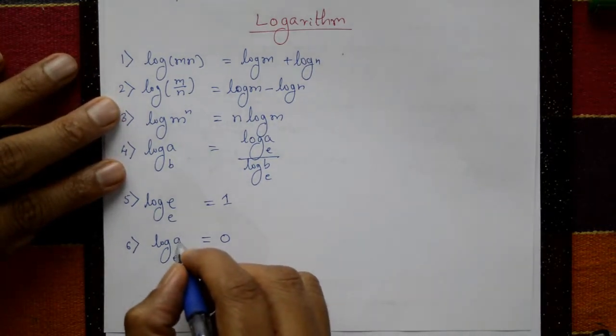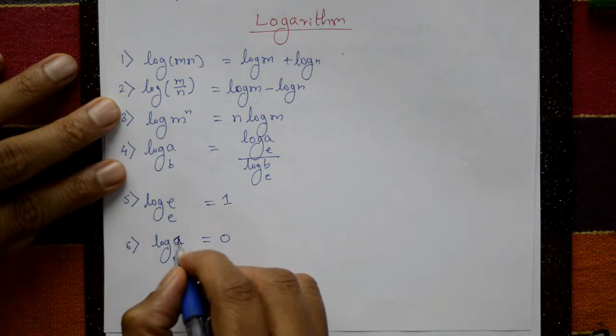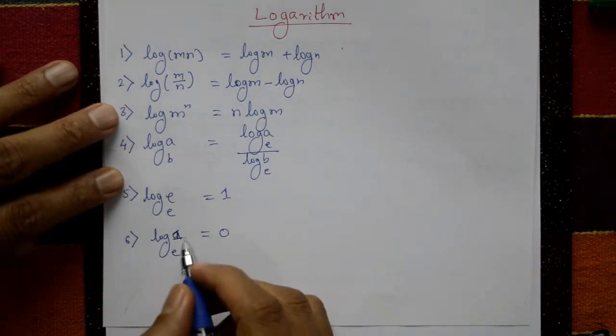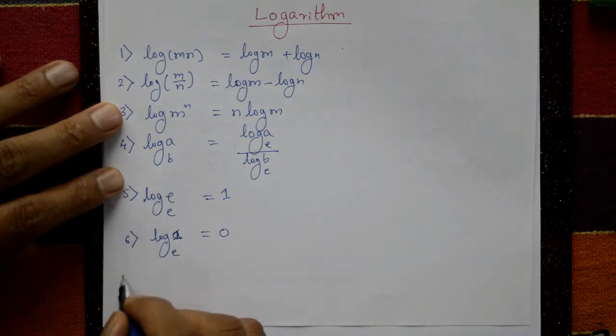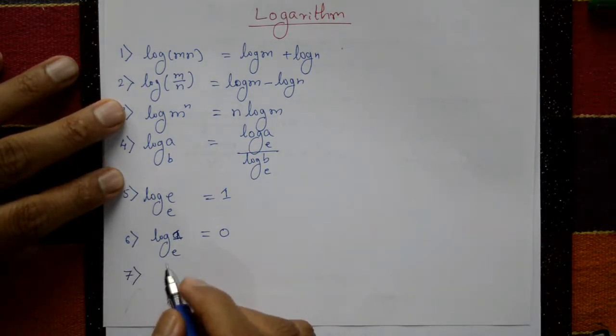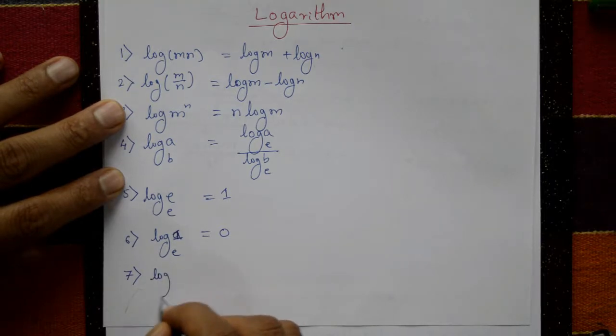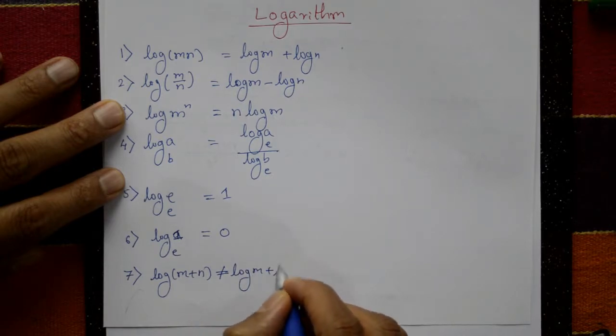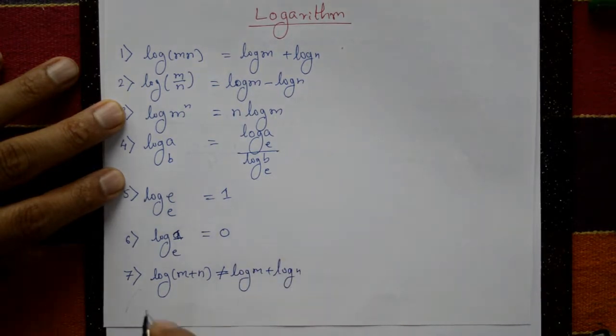Seventh one: log of m plus n. This is not equal to log m plus log n. This is not equal.